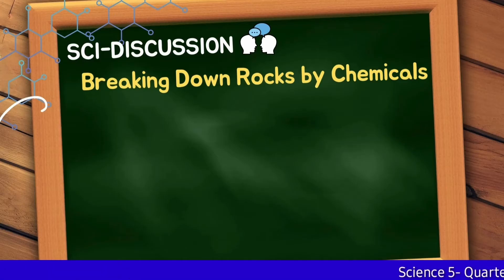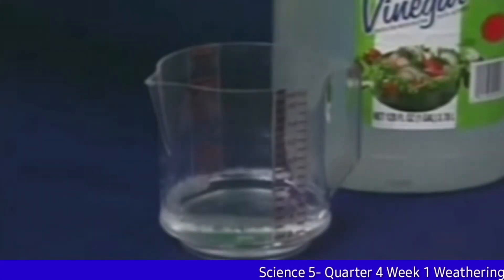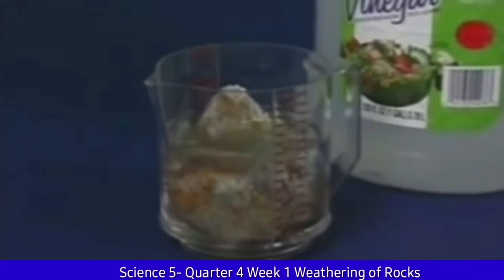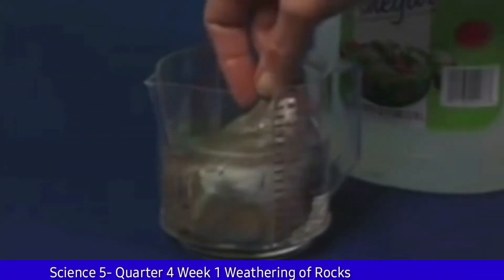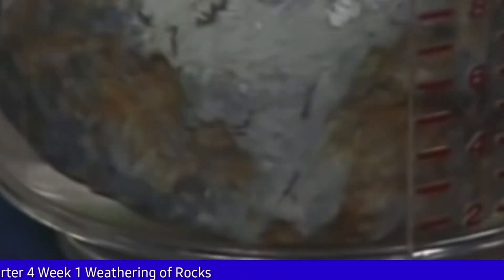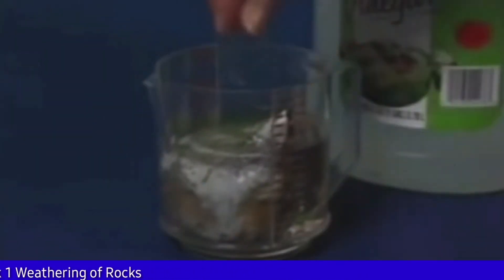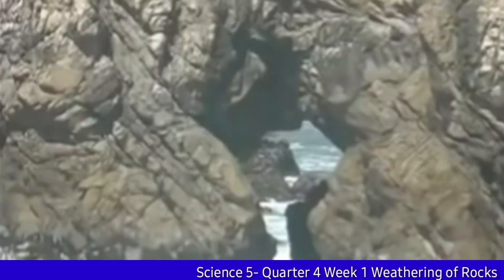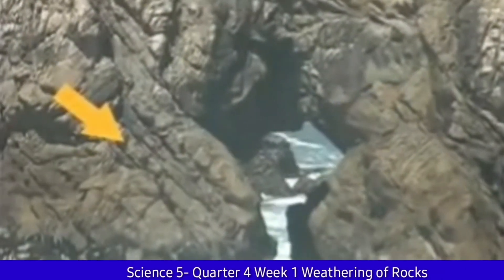Breaking down of rocks by chemicals: Carbon dioxide from the air or soil sometimes combines with water. This produces a weak acid that can dissolve rock.